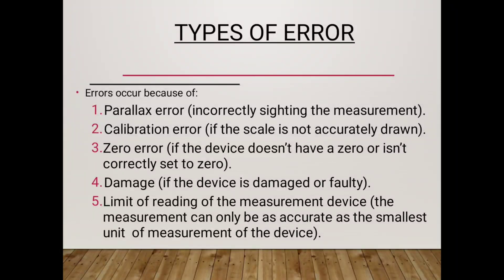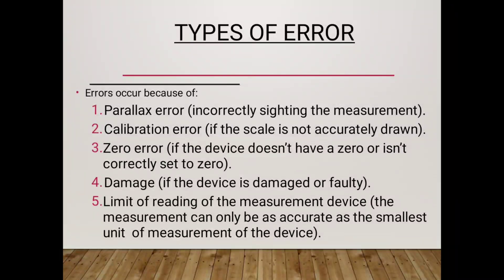Parallax Error refers to incorrectly sighting the measurements. Calibration Error occurs if the scale is not accurately drawn. Zero Error occurs if the device does not have a zero or is incorrectly set to zero.